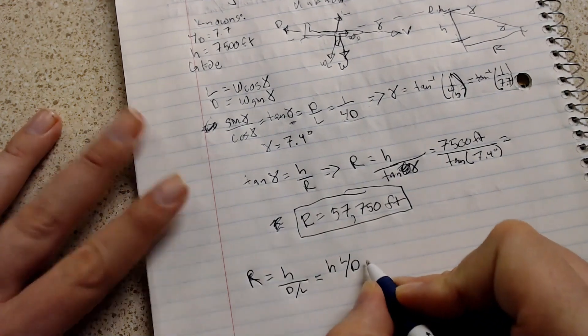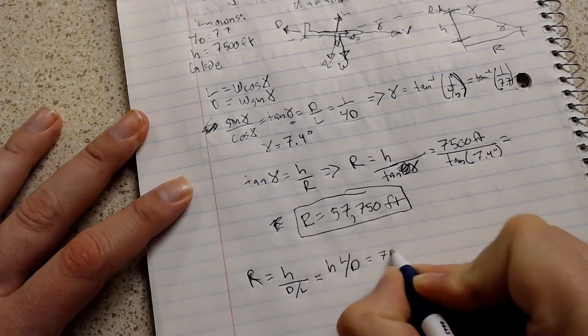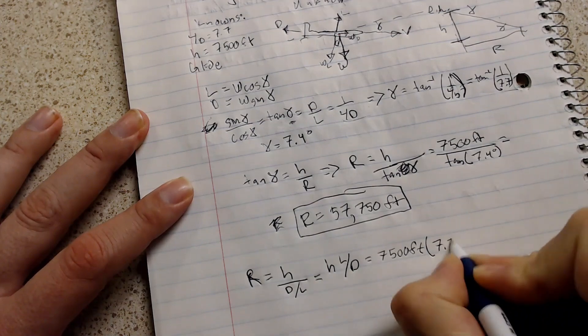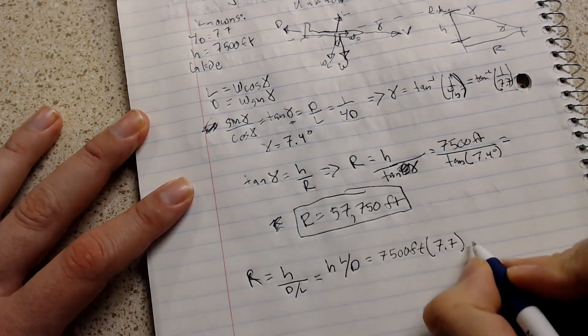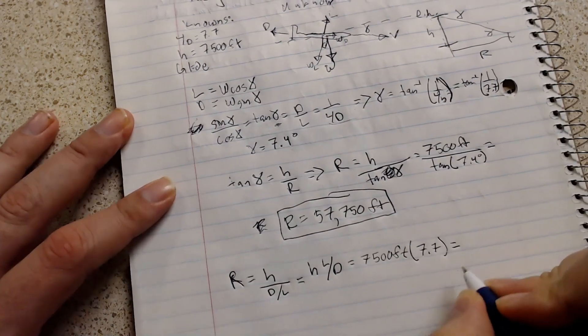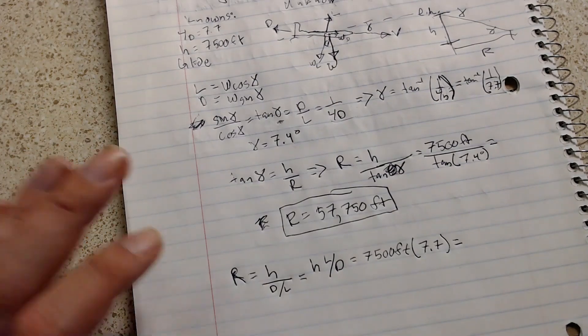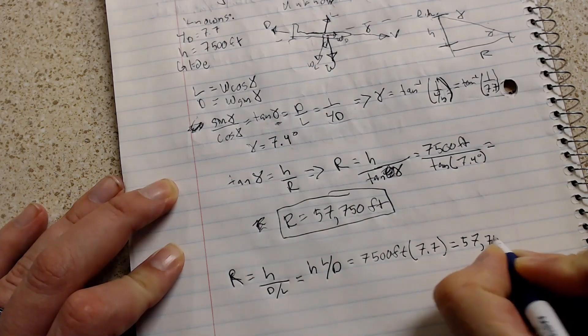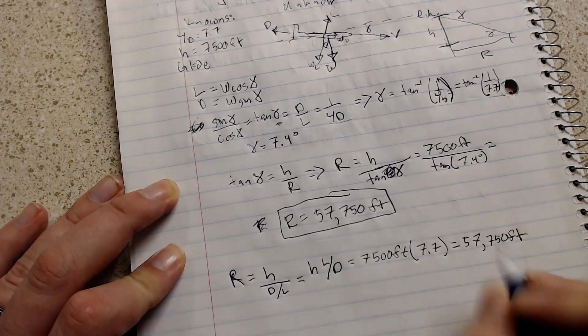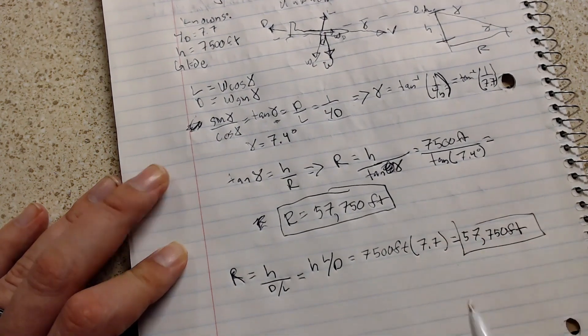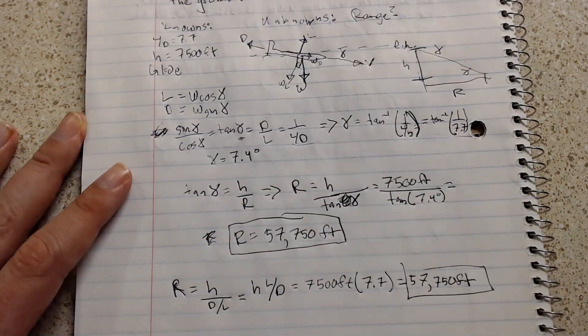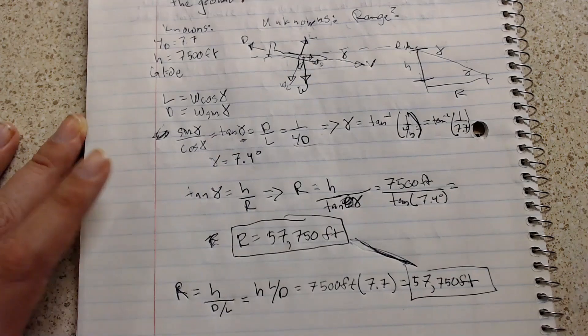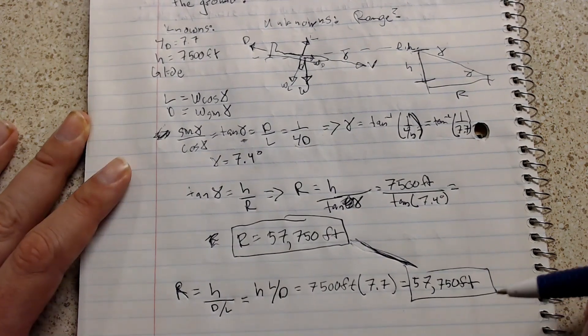Now, if you plug in the values we know, which would be 7,500 feet times 7.7, plug that into your calculator, you will get an answer of surprise, surprise, 57,750 feet. As you can see, we get the same answer between both methods.